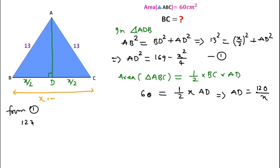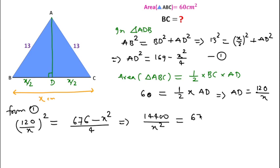Now from equation 1, we can write in place of AD, 120 over x whole square equals 676 minus x square over 4. This becomes 14400 over x square equals 676 minus x square over 4.